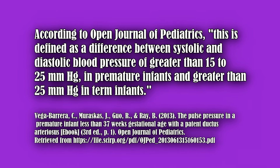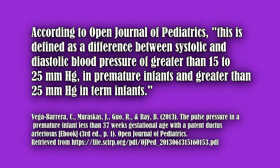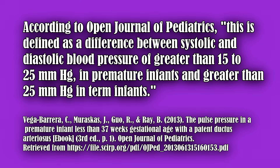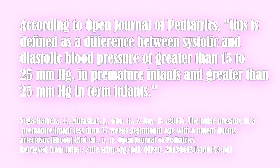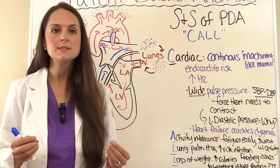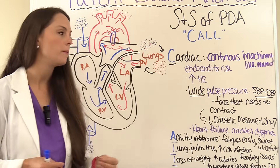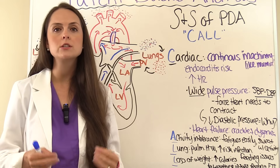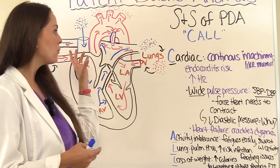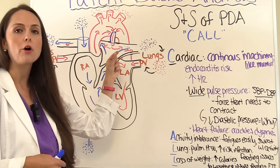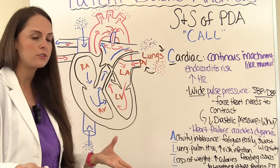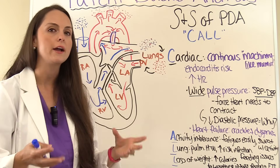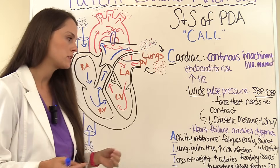According to the Open Journal of Pediatrics, wide pulse pressure is defined as a difference between systolic and diastolic blood pressure of greater than 15 to 25 mmHg in premature infants and greater than 25 mmHg in term infants. The diastolic pressure drops because during the heart's resting phase, blood escapes into the pulmonary artery, lowering diastolic pressure. So when you subtract a lower diastolic from the systolic, you get a higher number. They can also have heart failure, which can present with lung congestion, crackles, and difficulty breathing.